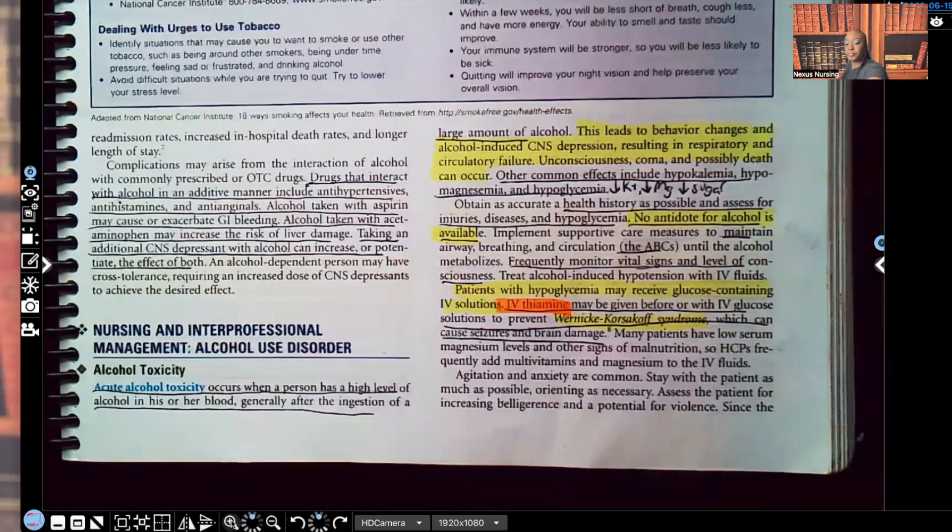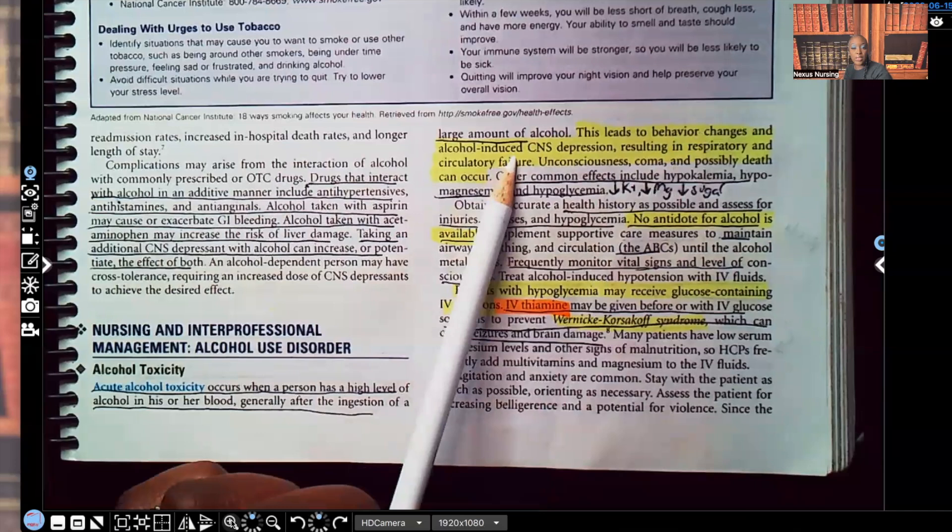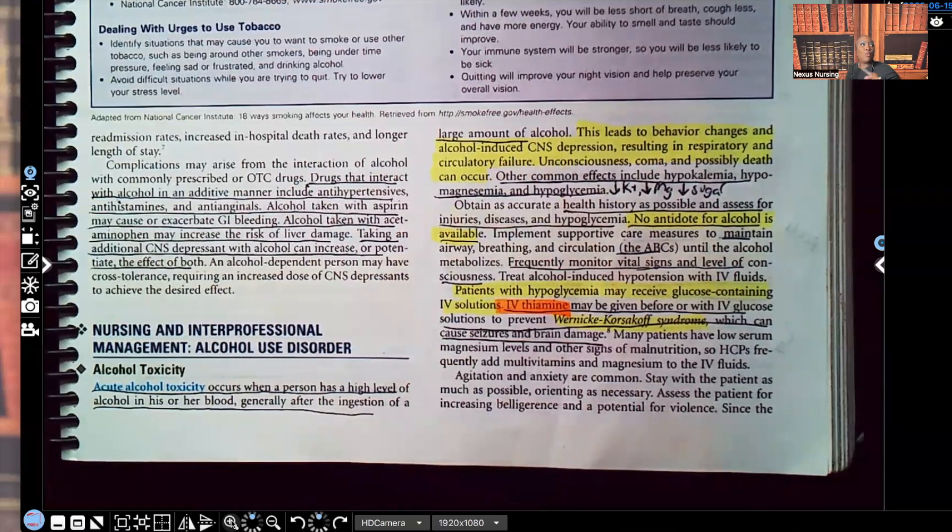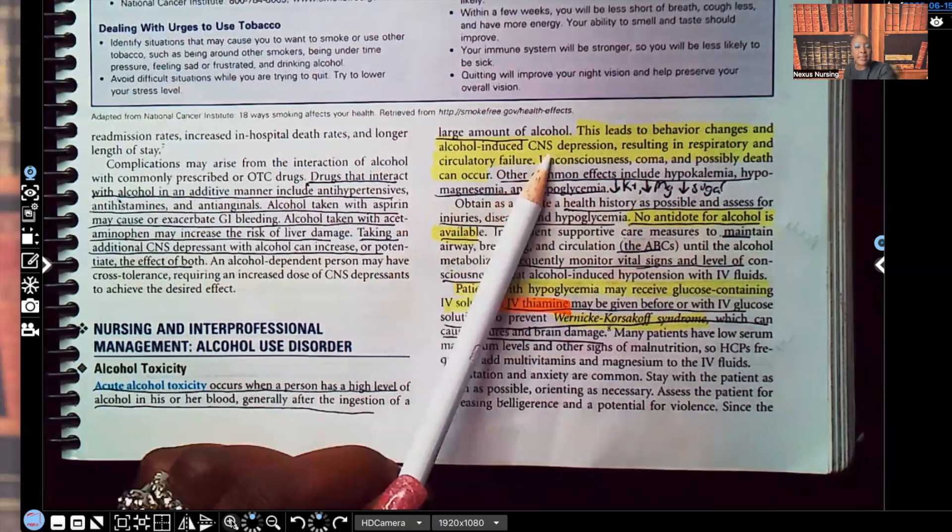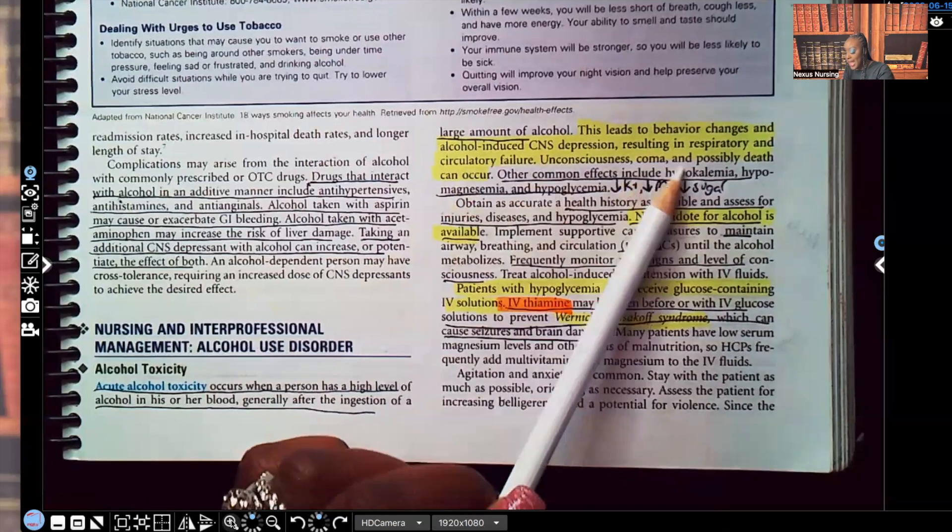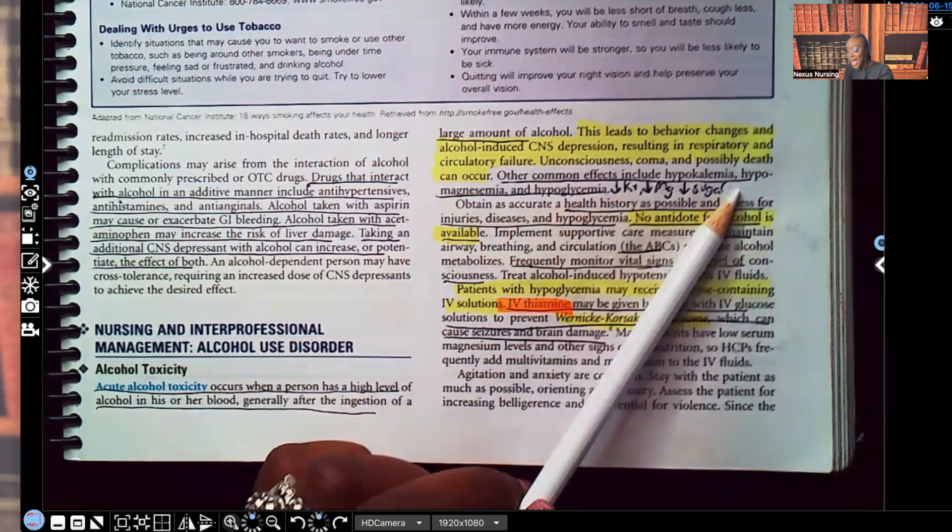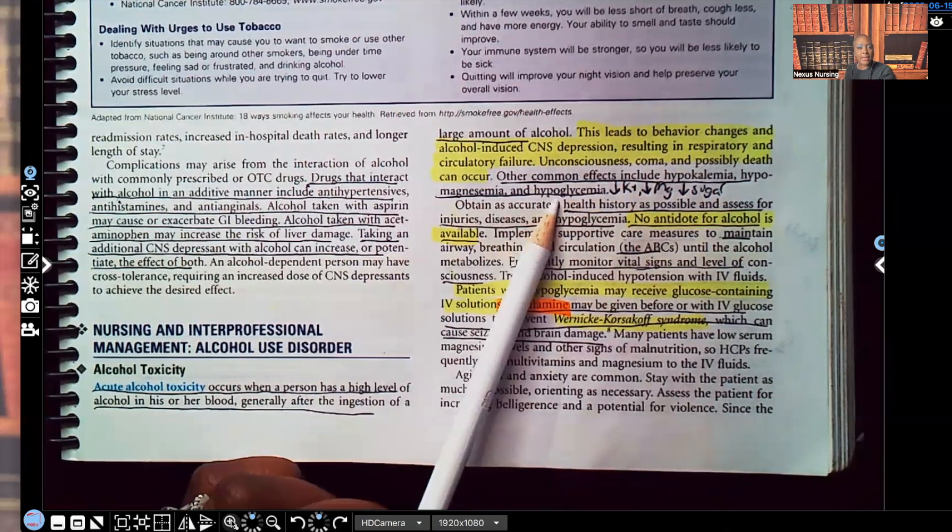Okay, so look at what it says. Alcohol toxicity occurs when a person has a high level of alcohol in their blood, generally after ingesting a large amount of alcohol. This leads to behavior changes and alcohol-induced CNS depression. Because when you think about someone who's drunk, you think about them partying and being very hyper. You would think alcohol was a stimulant, but it's not. Alcohol is a depressant. It depresses the system. Take a look at this. CNS depression resulting in respiratory and circulatory failure. Everything slows down. Unconsciousness, coma, and possibly death can occur.